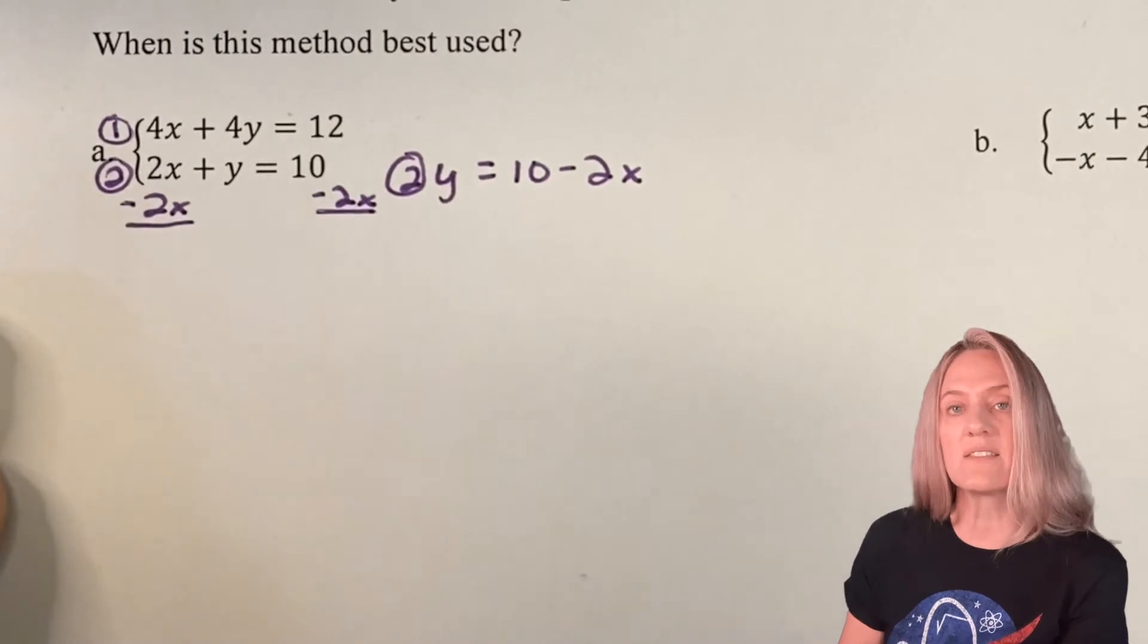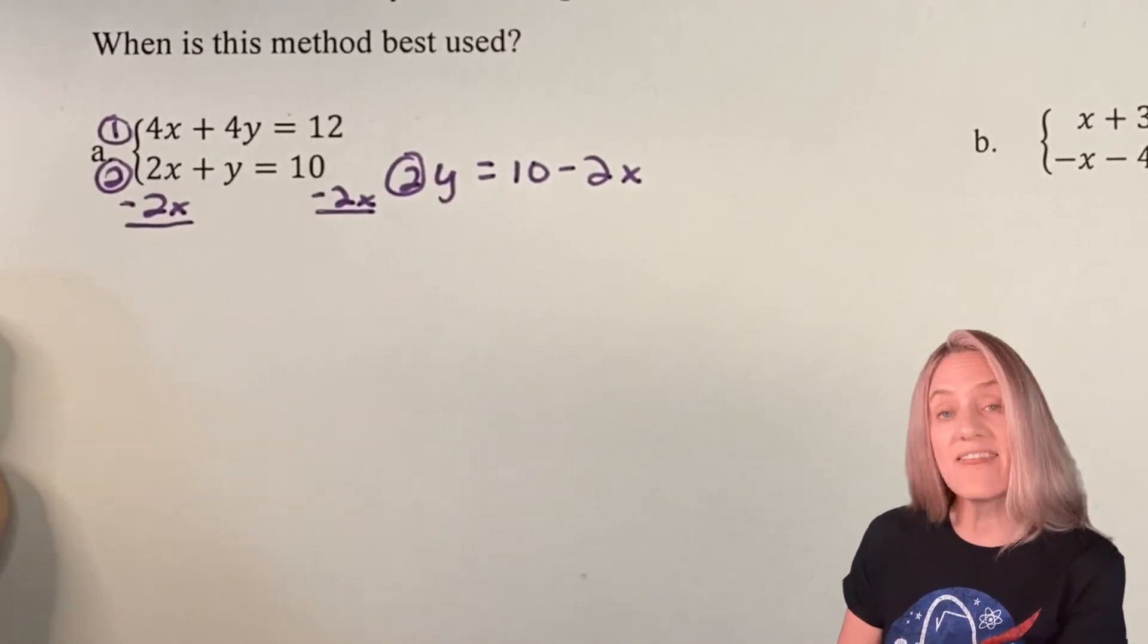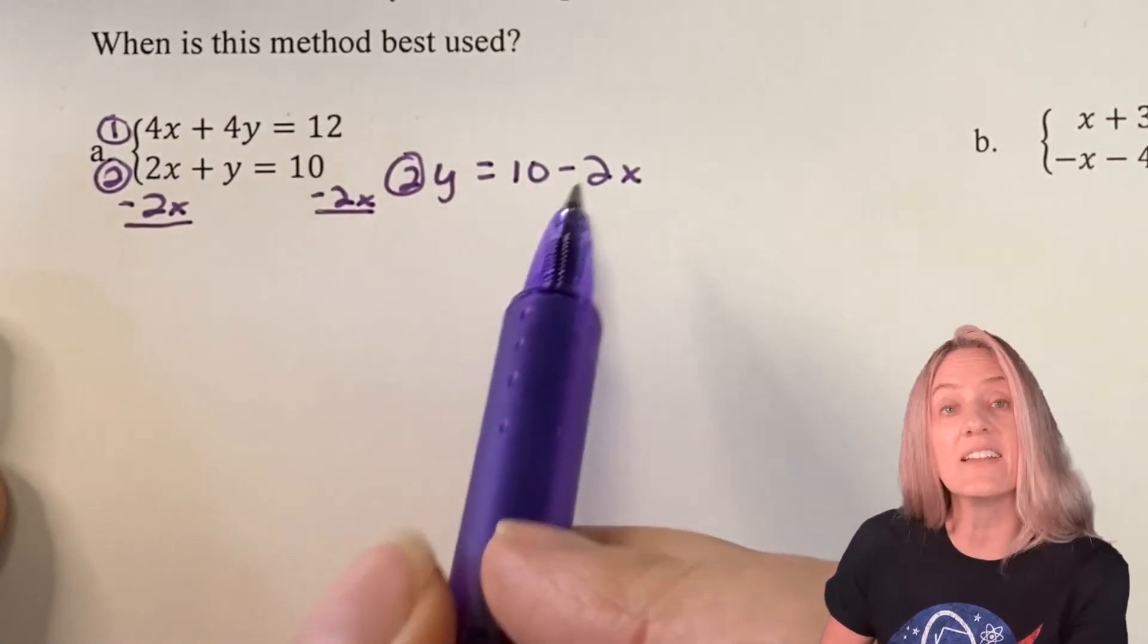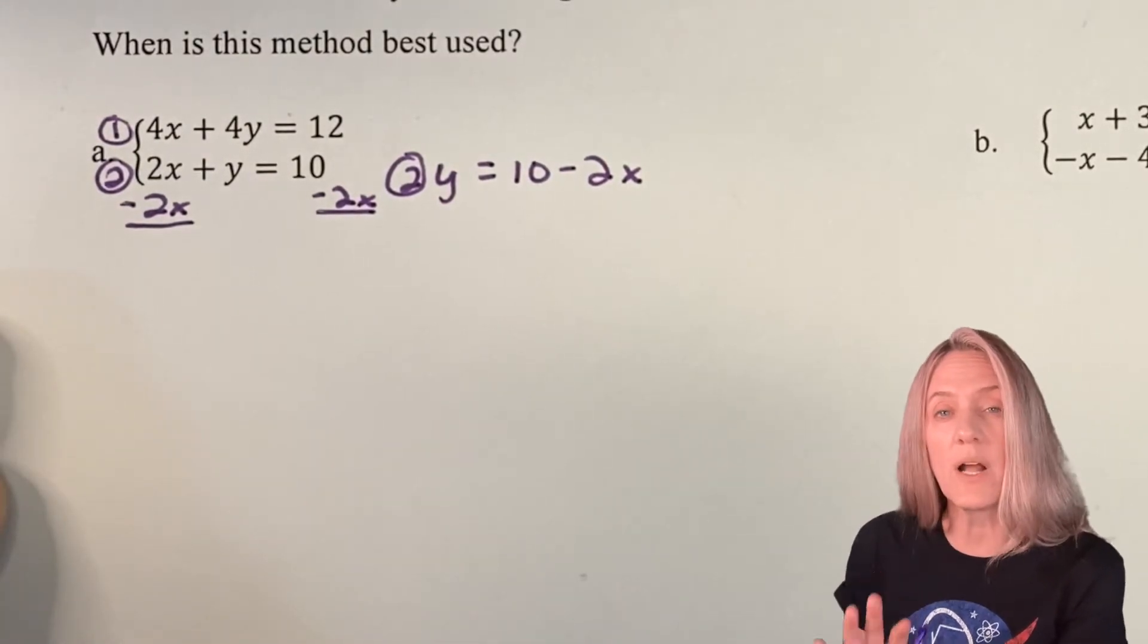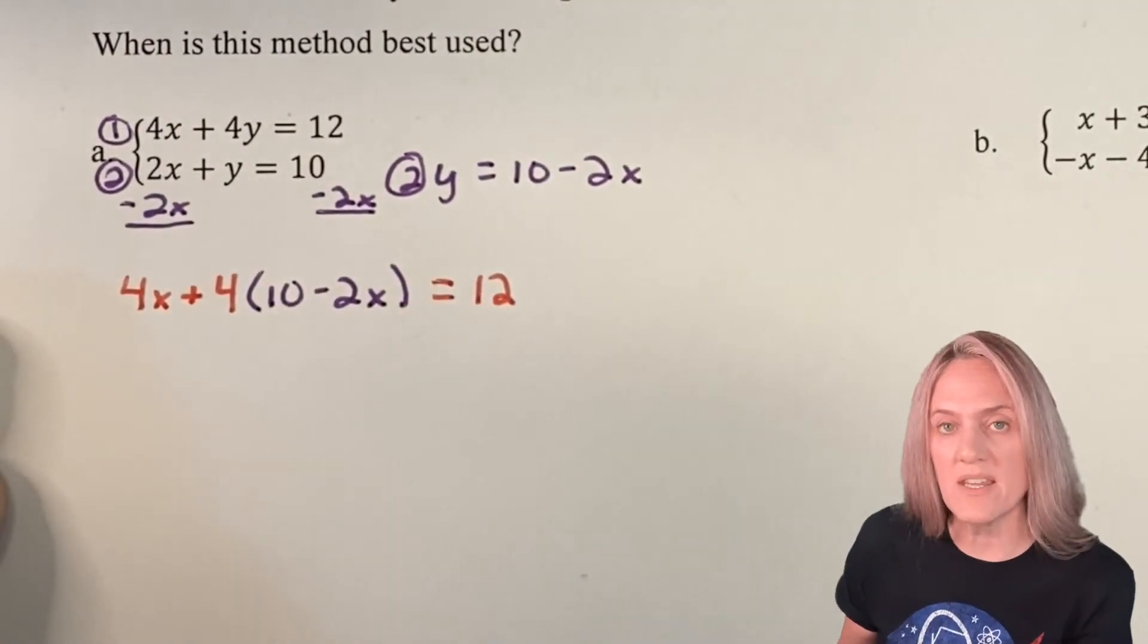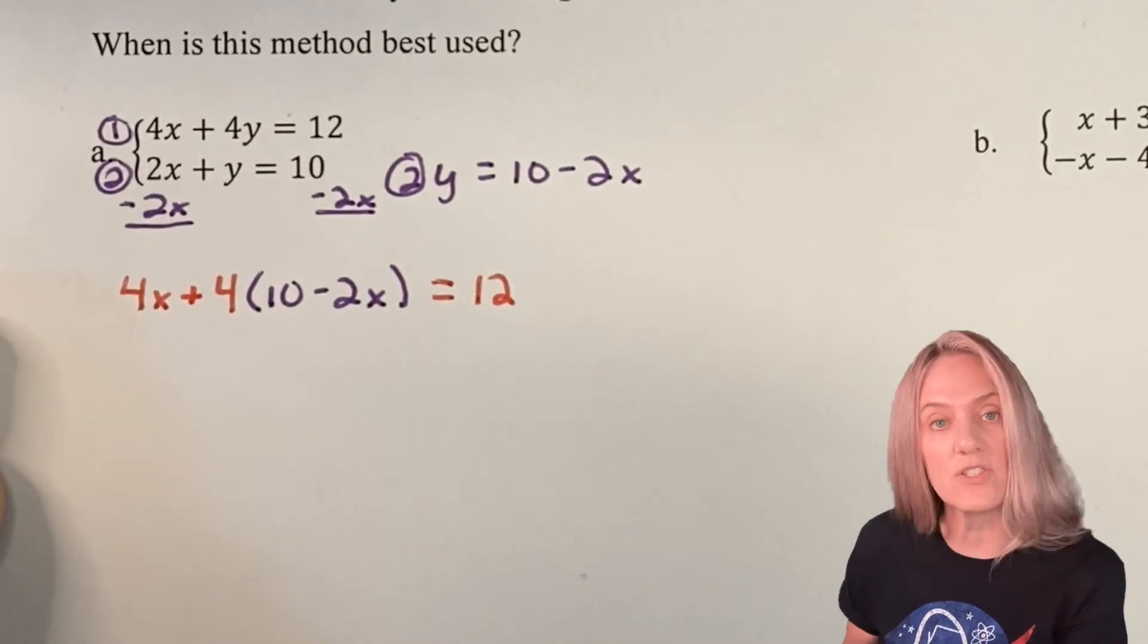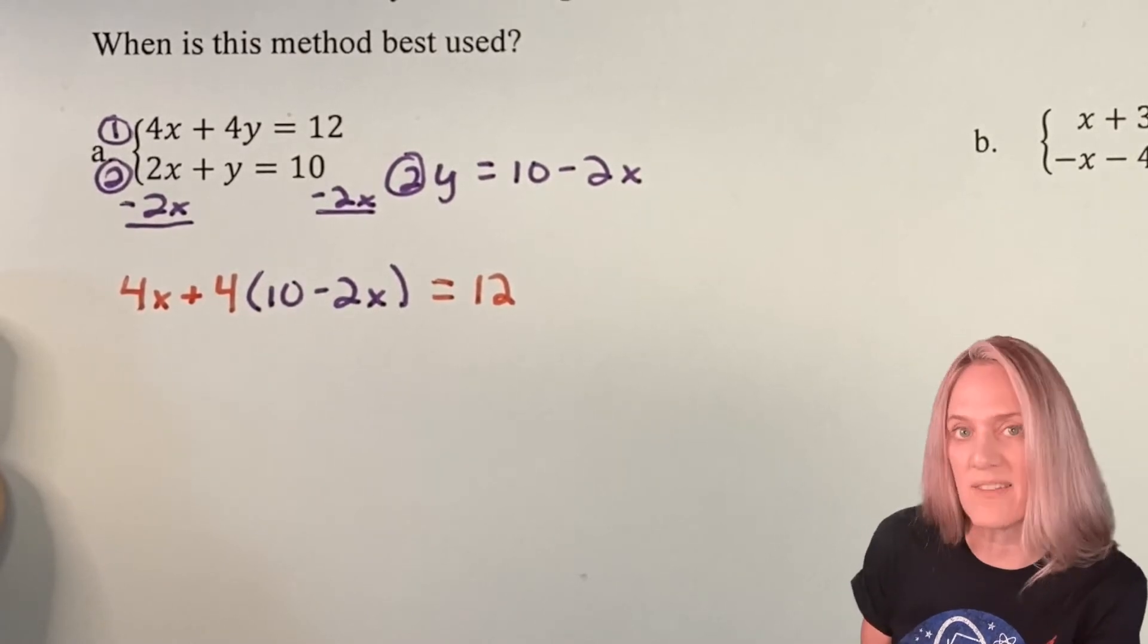Now my equation 2 is in slope-intercept form. This is helpful because I now have an equivalency statement for y equals. That means I can take that value, 10 - 2x, and substitute into the first equation for y.